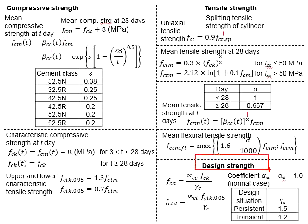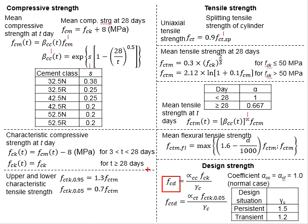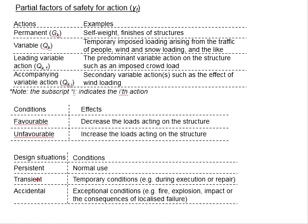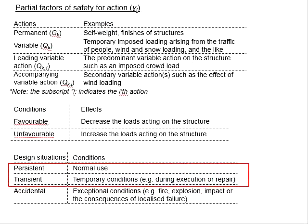As for the design strength, the design compressive strength of concrete is determined by the formula for FCD, which is FCK divided by the partial factor of safety of the material, times a coefficient alpha_cc. For the normal case, alpha_cc is equal to 1.0. As for the partial factor of safety for concrete, it is dependent on the design situation; for normal applications, the factor is 1.5.